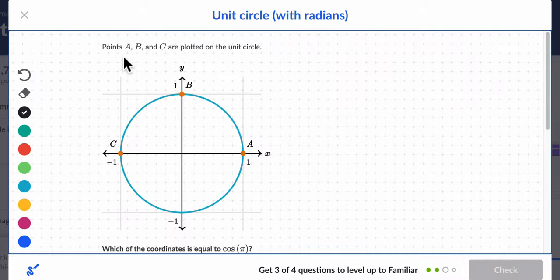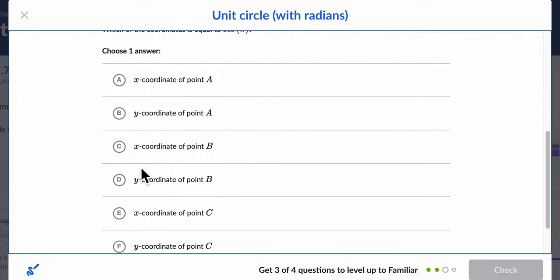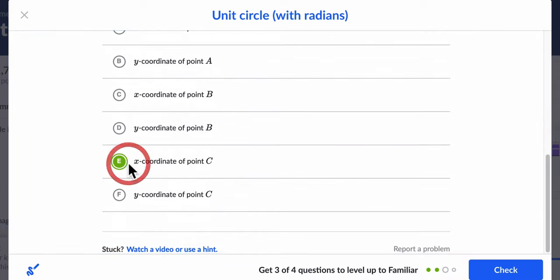Okay, points A, B, and C are plotted on the unit circle. Which of the coordinates is equal to the cosine of pi? Well, the cosine of pi radians is 180 degrees, and that corresponds to point C. So, it's the x value. The cosine always refers to the x value of point C.